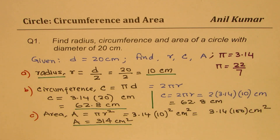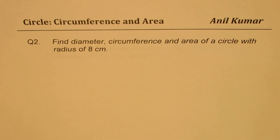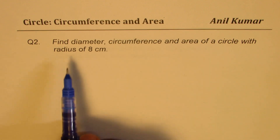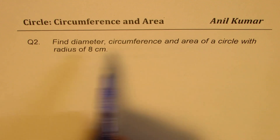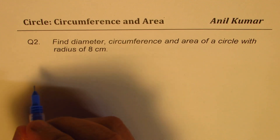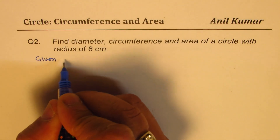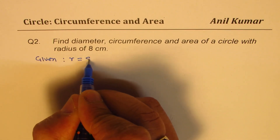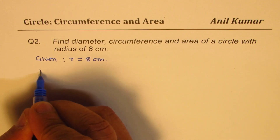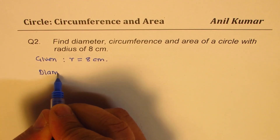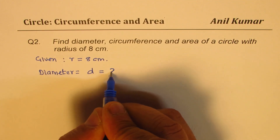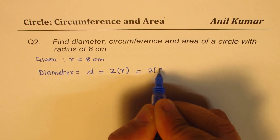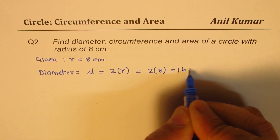Now, let's get to question number two. In this case, we are given the radius. The question is: find diameter, circumference, and area of a circle with radius of 8 centimeters. So, we are given radius equals to 8 centimeters. First, let's find diameter. Diameter d equals twice the radius — 2 times 8 — which is 16 centimeters.